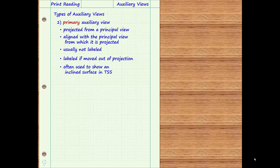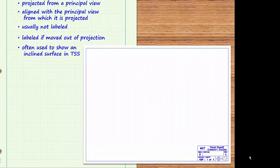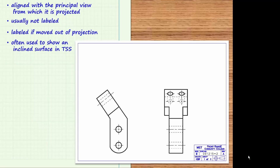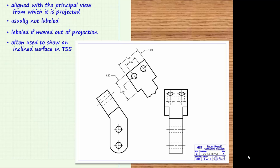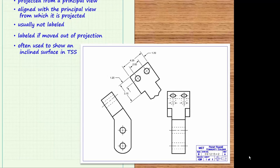A primary auxiliary view can be drawn to show an inclined surface in true size and shape. If an inclined surface has features that must be dimensioned, then they should be dimensioned in a view that shows that surface in true size and shape, which requires an auxiliary view to be drawn on the print. For example, the part in this print has an inclined surface that is perpendicular to the frontal viewing plane, so in the front view it appears as a line representing the edge of the inclined surface. In the right side view, the inclined surface appears foreshortened. Since this surface includes two holes that must be dimensioned, a primary auxiliary view can be projected from the front view to show the inclined surface in true size and shape, and this is where the circles should be dimensioned.